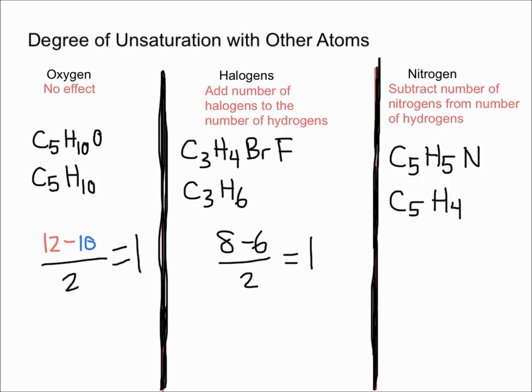This molecule, C5H5N, is equivalent to C5H4 when you're talking about degrees of unsaturation. To calculate it, we're going to do 12 minus 4 over 2, which gives you 4. So the index of hydrogen deficiency or degree of unsaturation is 4.